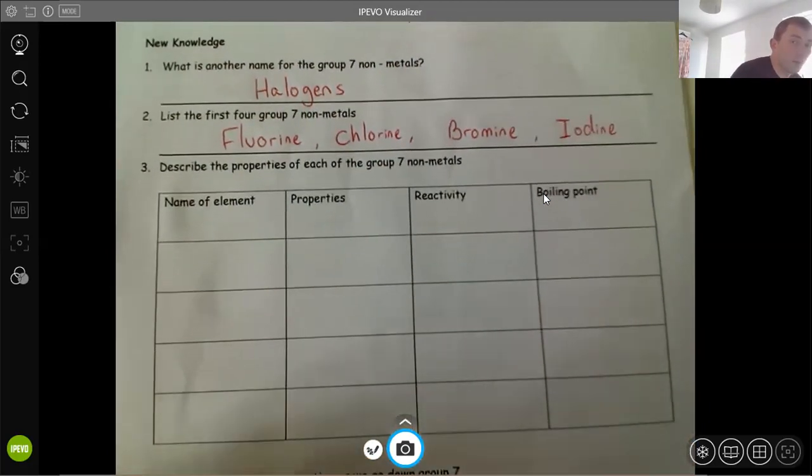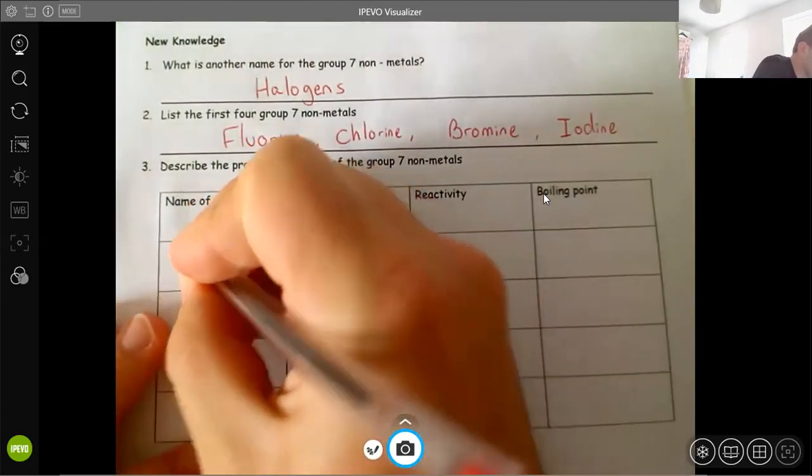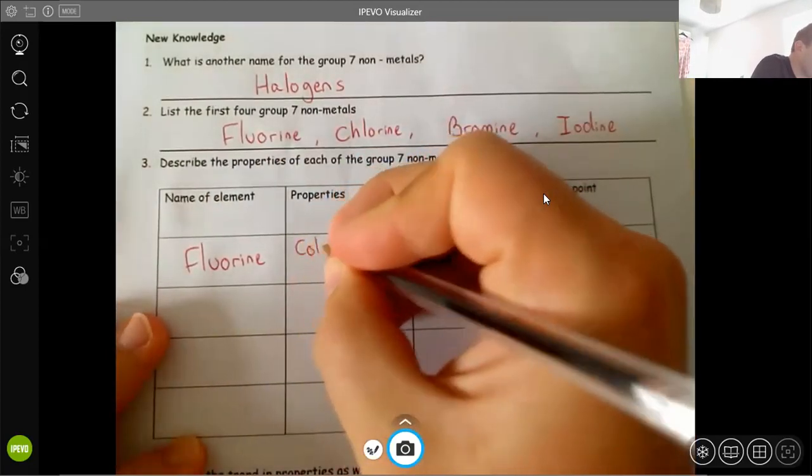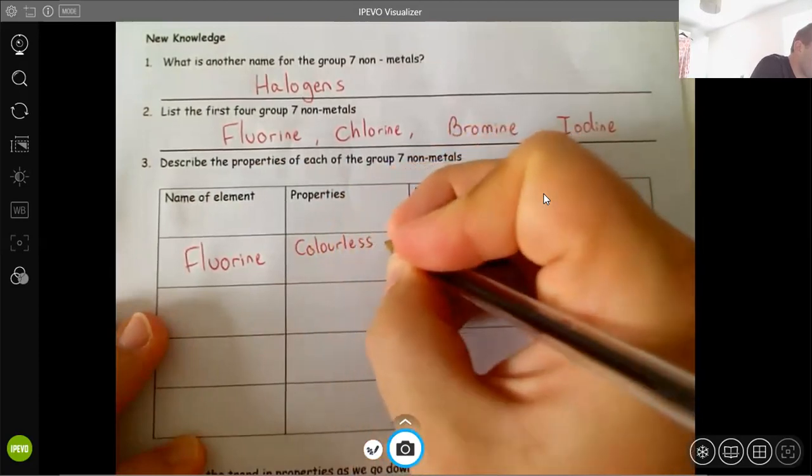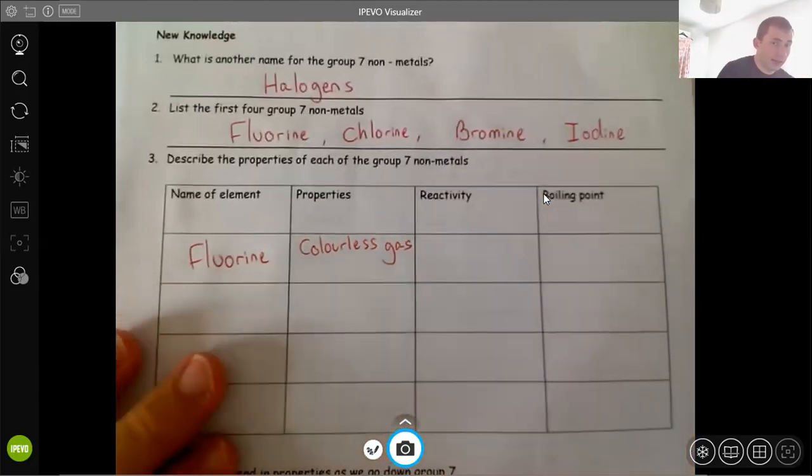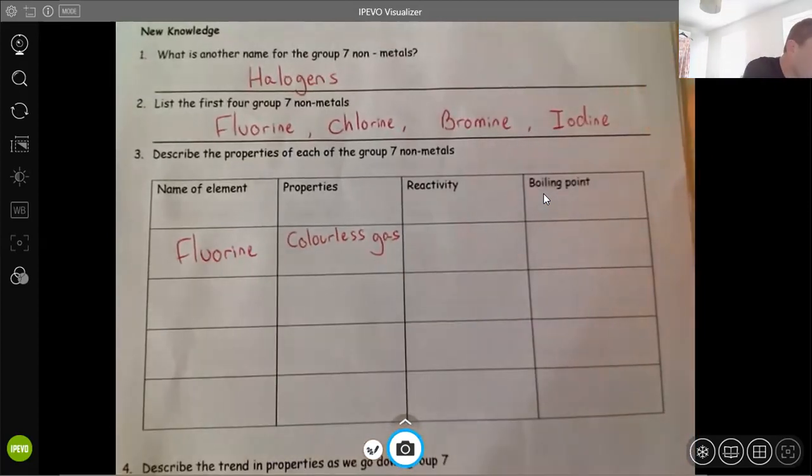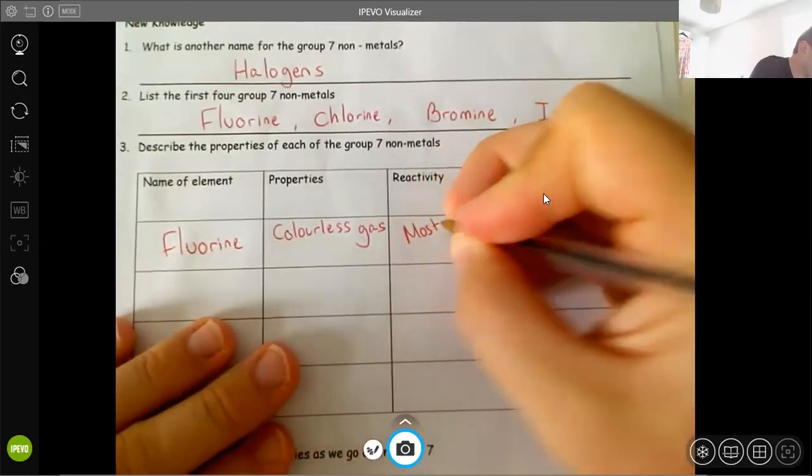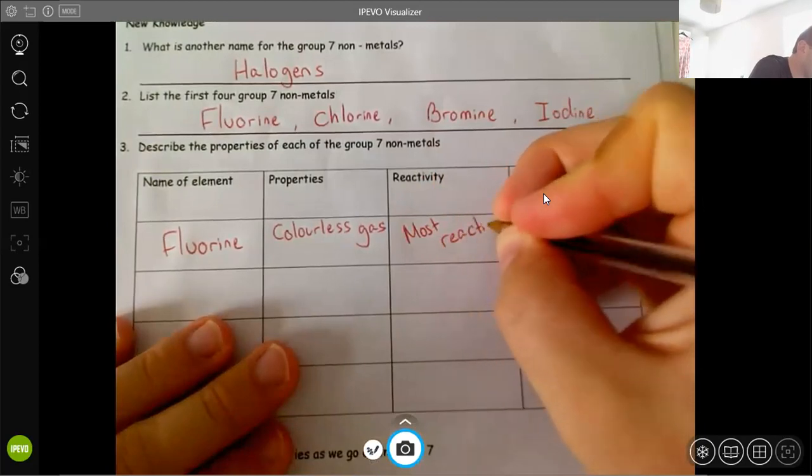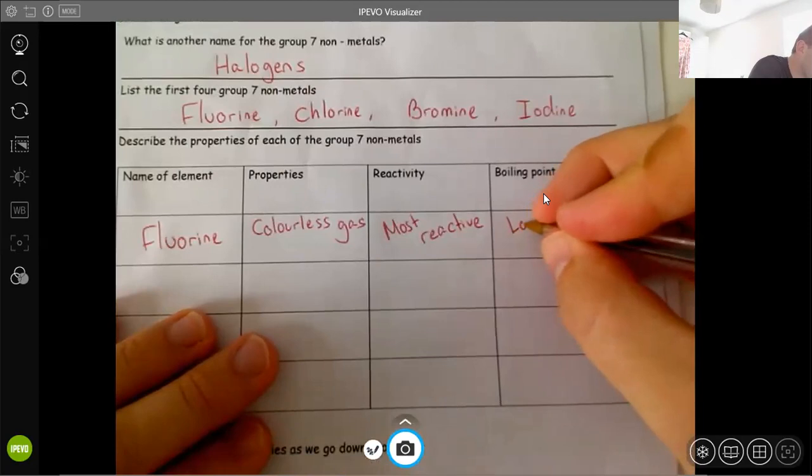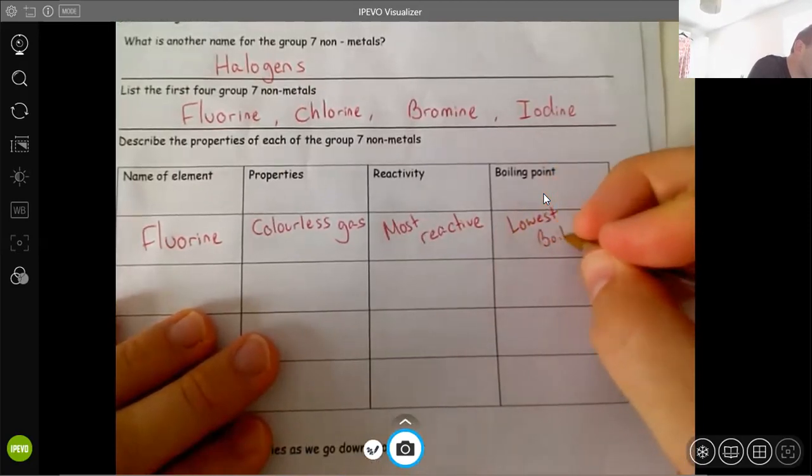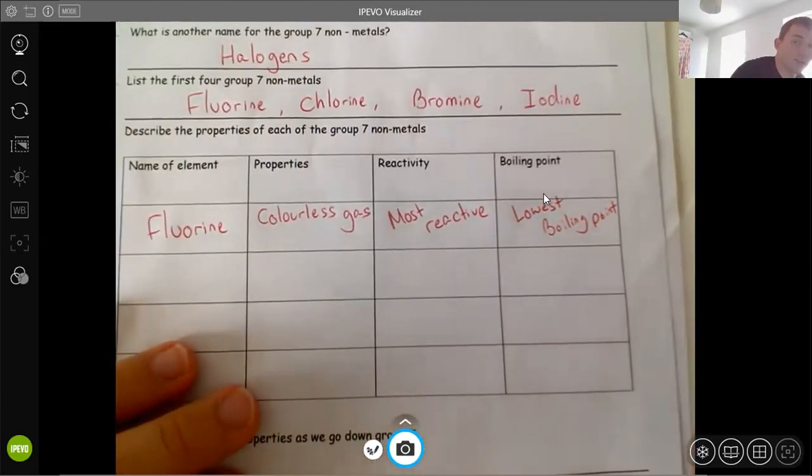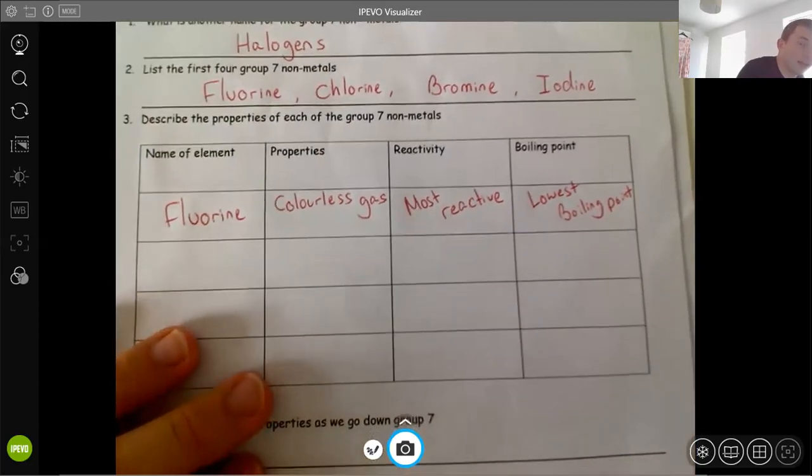So let's go through each one and talk about what they're all about. So first of all, we're talking about fluorine. So fluorine. Now its properties is it is a colorless gas. So it is a gas, you can't see it. It is very toxic, horrible stuff, disgusting actually. And it is the most reactive of the four, and it also has the lowest boiling point. So fluorine is right at the top, it's a colorless gas, it's the most reactive, and also has the lowest boiling point.